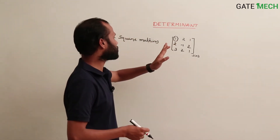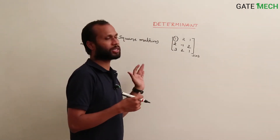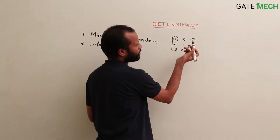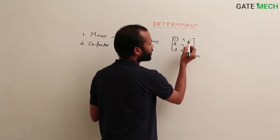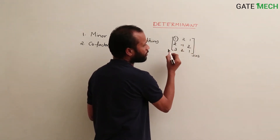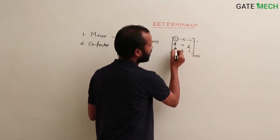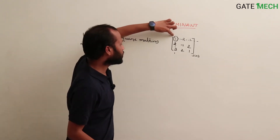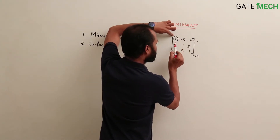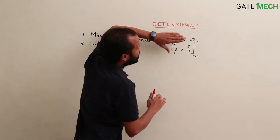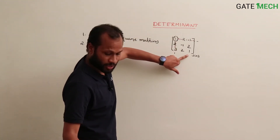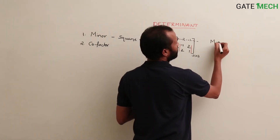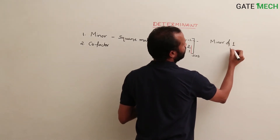Minor is also sometimes called the first minor or principal minor, but we won't go into those details now. The minor of an element — simply called minor — is the determinant of the remainder matrix when you hide the row and column to which it belongs. For element 1 at position (1,1), we leave out the first row and first column, and the remaining sub-matrix's determinant is the minor of 1.